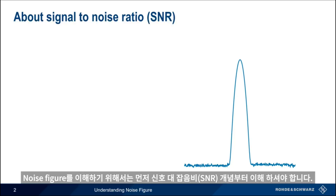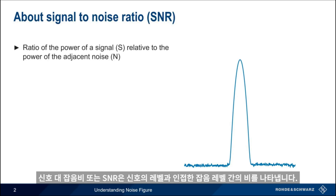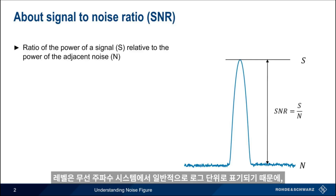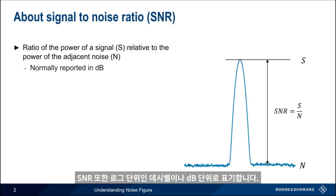To understand noise figure, we first need to start with signal-to-noise ratio. Signal-to-noise ratio, or SNR, is simply the ratio of the power of a signal relative to the power in the adjacent noise. Since power in radio frequency systems is normally reported in logarithmic units, SNR is also normally reported in logarithmic units — that is, in decibels or dB.